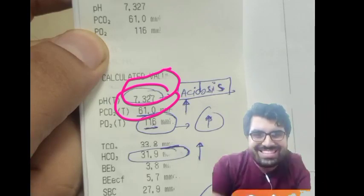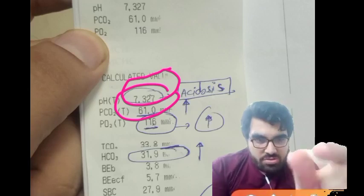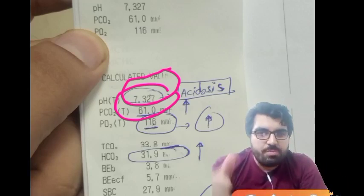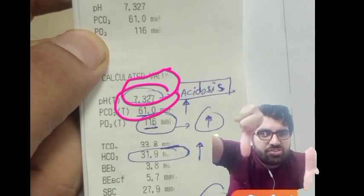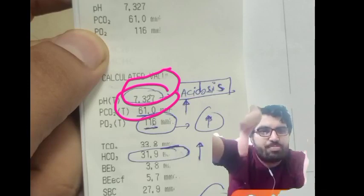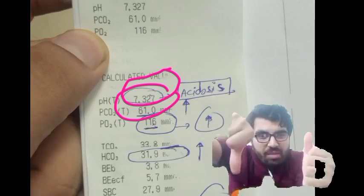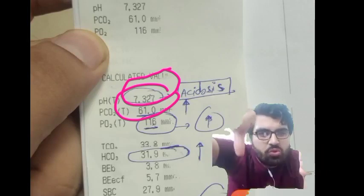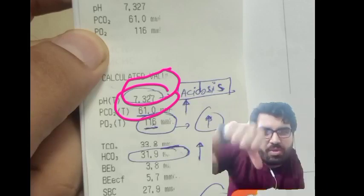Now coming toward diagnosis of this ABG. If you see the pH, pH is decreased. You look at the CO2, that is increased. So the problem is respiratory. Without looking into the bicarbonate, you can diagnose this patient. pH down, CO2 upward, so the problem is respiratory.